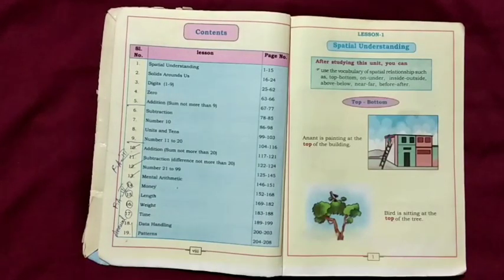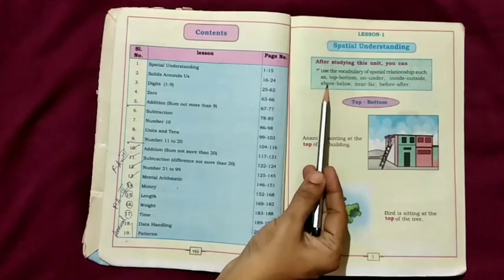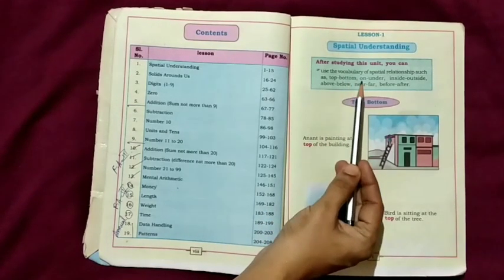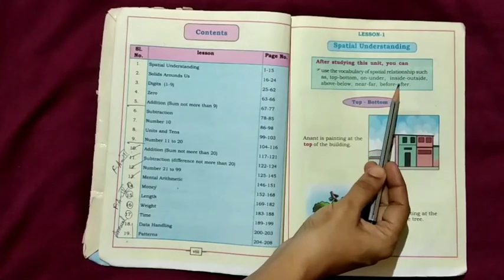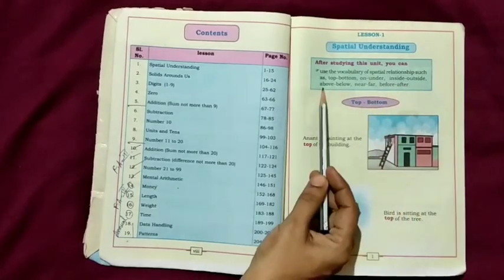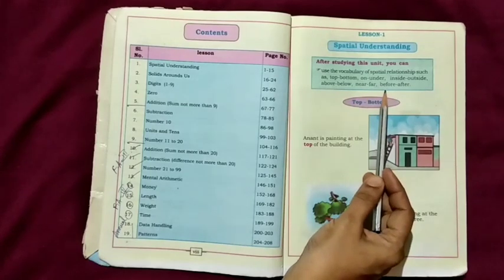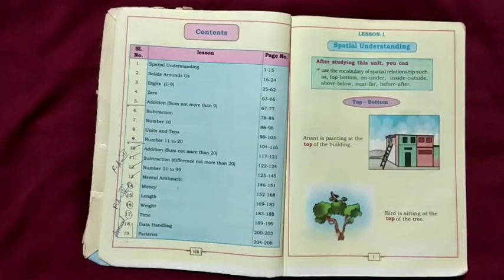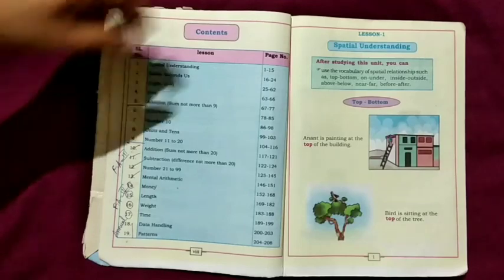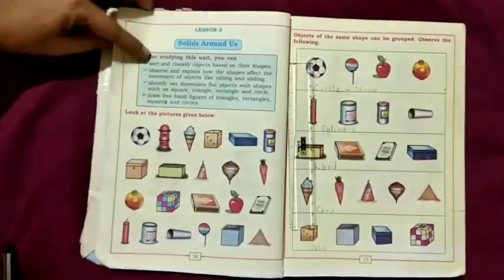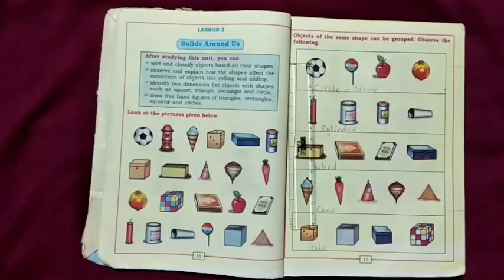Hello children, last class we discussed spatial understanding, that is the clear position of the object: top, bottom, on, under, inside, outside, above, below, near, far, before, after. Today in this class we are going to learn about solids around us.